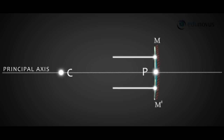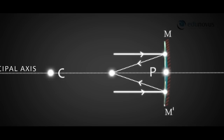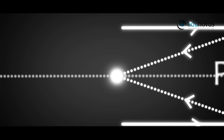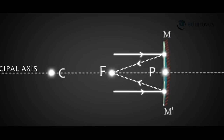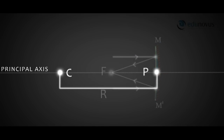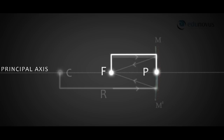If the incident rays on the mirror are parallel to the principal axis, then after reflection they meet at a point on the principal axis. This point is known as the principal focus, denoted by F. The distance between pole P and centre of curvature C is called the radius of curvature, denoted by R. The distance between pole P and principal focus F is called the focal length of the mirror, denoted by small f.